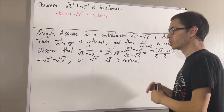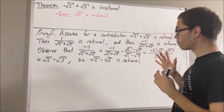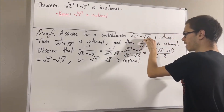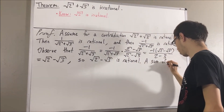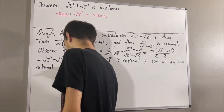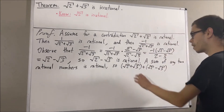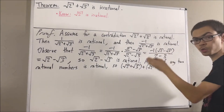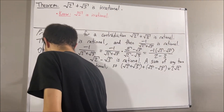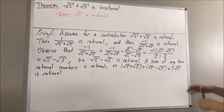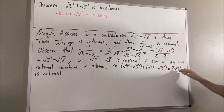Next, if you recall, the sum of any two rational numbers is rational. Therefore, if we add (square root of 2 plus square root of 3) and (square root of 2 minus square root of 3), the result will be a rational number. Adding these two together, we get 2 times square root of 2. So 2 square root of 2 is rational. And if we take any rational number and divide it by 2, the result is still rational. Therefore, square root of 2 is rational.